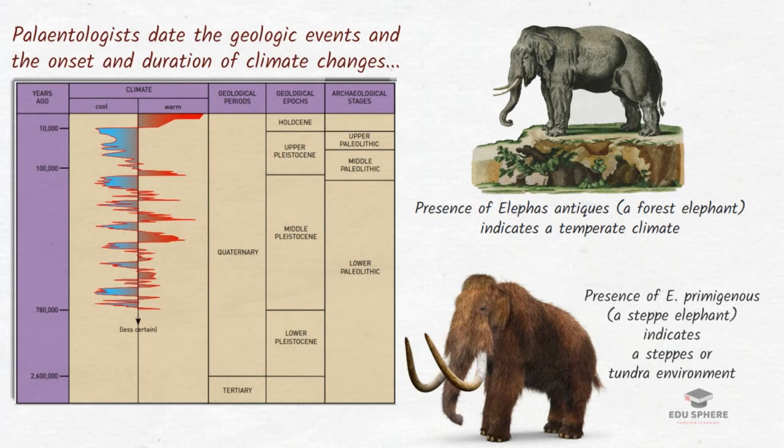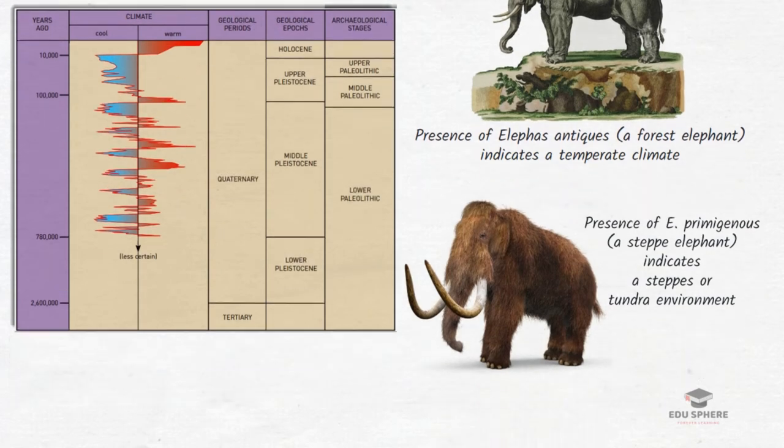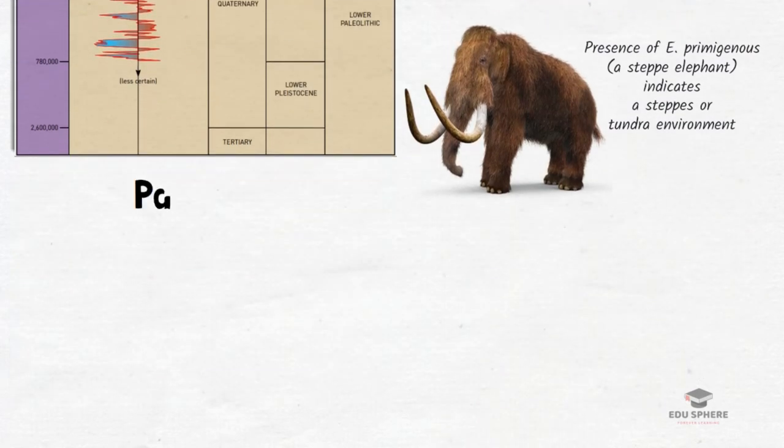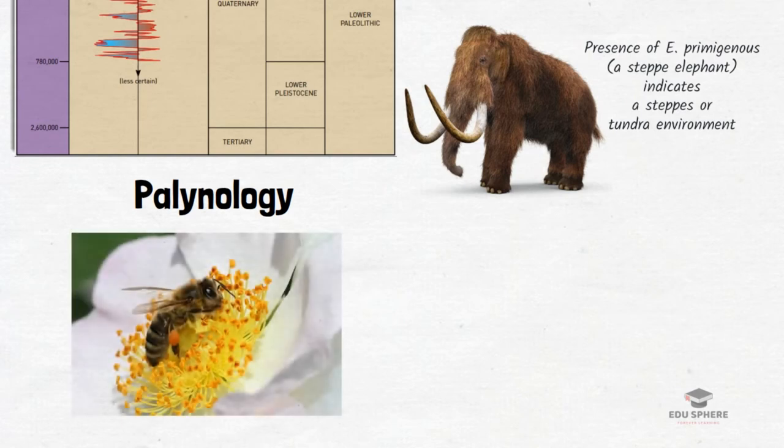While the presence of E. primigenius indicates a steppe or tundra environment, almost glacial-like conditions. However, this method has certain shortcomings — a margin of 1,000 years error might occur, as animals have not become extinct all at once; some might have lived in isolated areas, making this method of dating quite misleading.